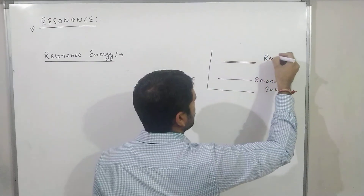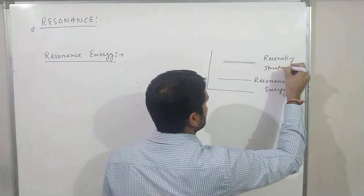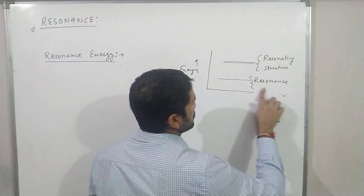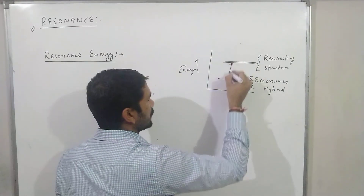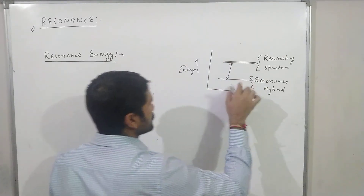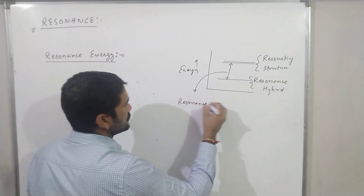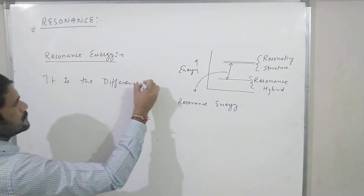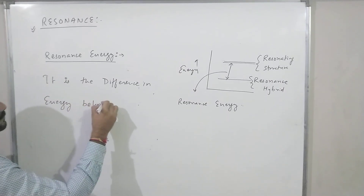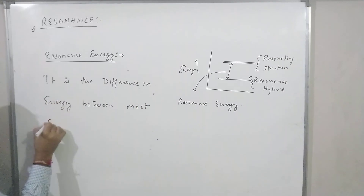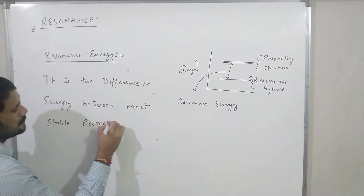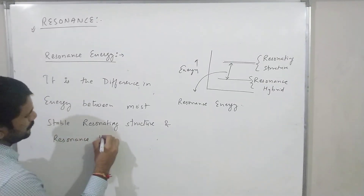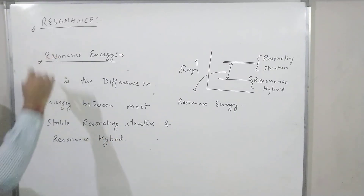The resonating structures have higher energy, while the resonance hybrid has lower energy. If we plot energy on an axis, the resonating structure's energy is higher and the resonance hybrid's energy is lower. The difference between the most stable resonating structure and the resonance hybrid is called the resonance energy. So the definition: resonance energy is the difference in energy between the most stable resonating structure and the resonance hybrid.